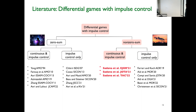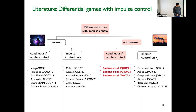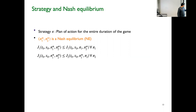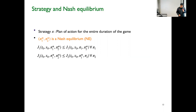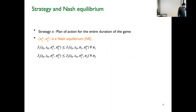To understand the information structure, we first need to define what is a strategy and what is a Nash equilibrium. A strategy pi is the plan of action for the entire duration of the game. We say that pi1* and pi2* are Nash equilibrium strategies of player 1 and player 2 respectively if two conditions hold: for a given pi2*, pi1* minimizes the cost for player 1; and for a given pi1*, pi2* minimizes the cost for player 2.